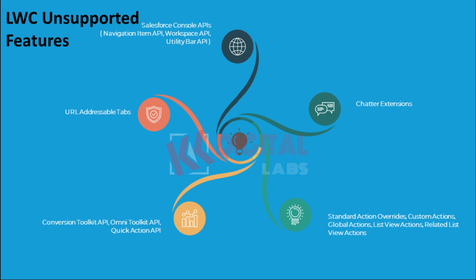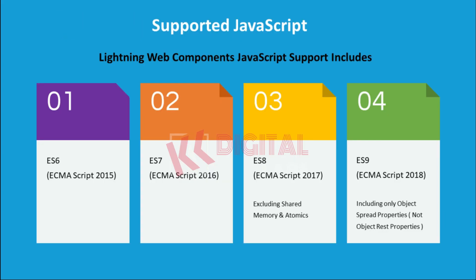LWC Unsupported Features include: Salesforce Console APIs, Navigation Item API, Workspace API, Utility Bar API, Real Addressable Tabs, Conversation Toolkit API, Omni Toolkit API, Quick Action API, Standard Action Overrides, Custom Actions, Global Actions, List View Actions, Related List View Actions, and Chatter Extensions. Supported JavaScript for Lightning Web Components includes: ES6 (ECMAScript 2015), ES7 (ECMAScript 2016), ES8 (ECMAScript 2017, excluding Shared Memory and Atomics), and ES9 (ECMAScript 2018, including only Object Spread Properties, not Object Rest Properties).